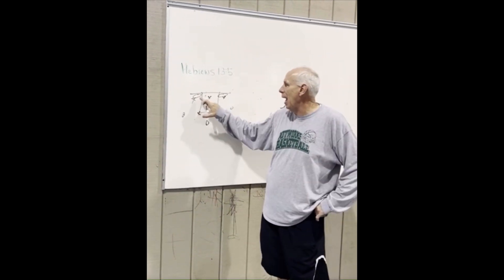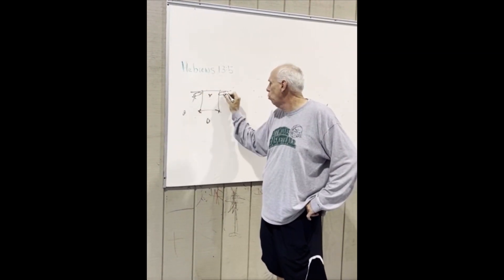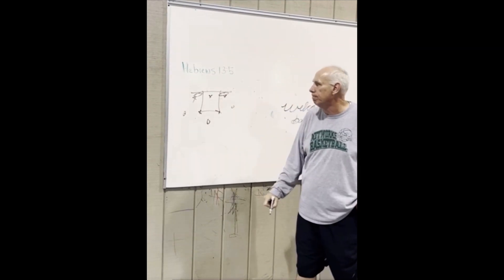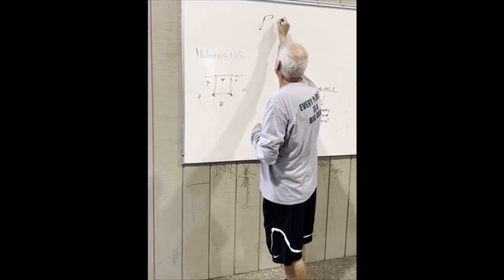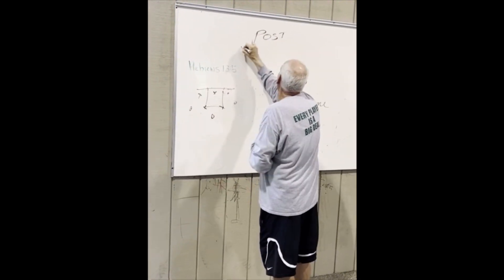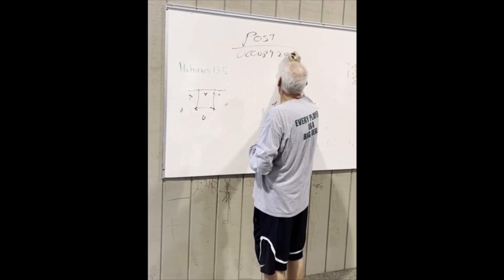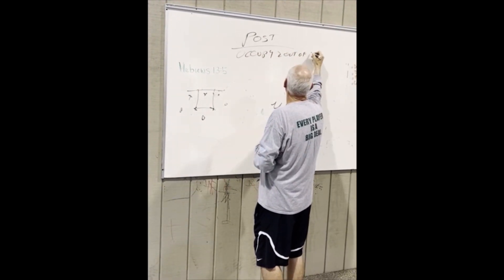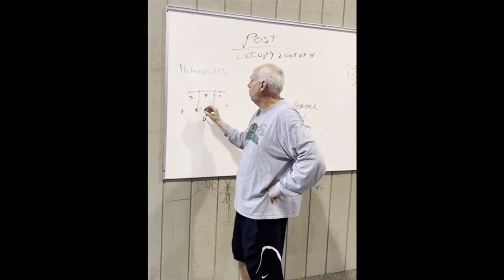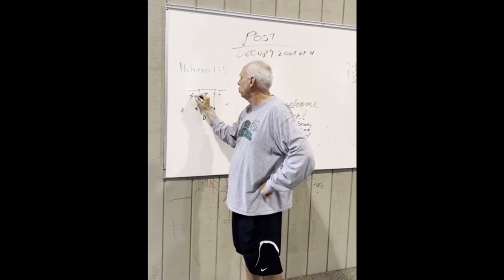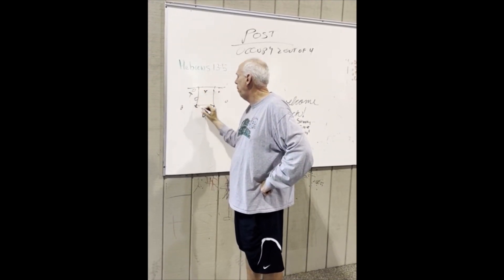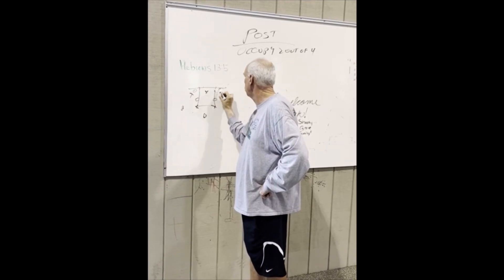We want to play out of the short, we want the ball to get into the short corner. So post players occupy two out of four. You're going to occupy two out of four spots. So the four spots are short corner, mid post, mid post, short corner.